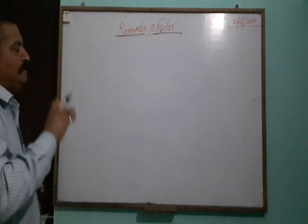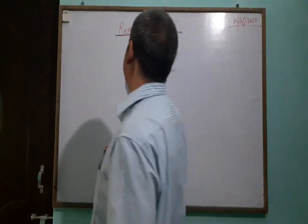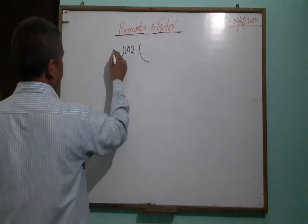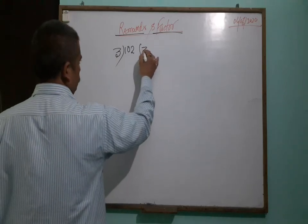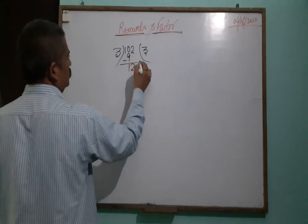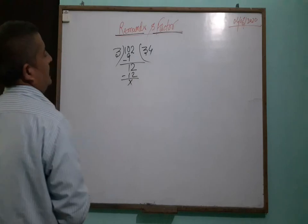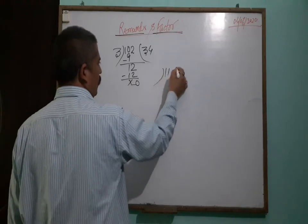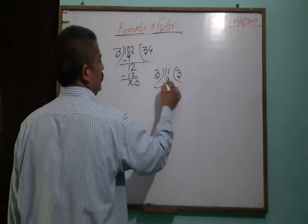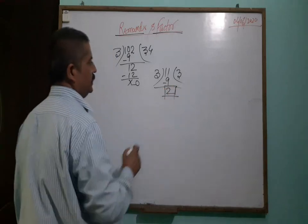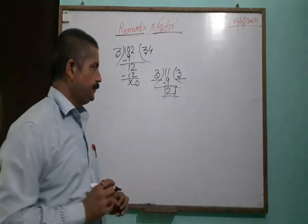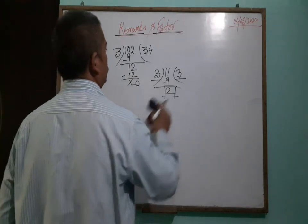First of all, to make this clear, let us look at a simple division question. For example, if 4 is divided by 3, the remainder is 0. In another example, 2 is the remainder, 3 is the quotient, 3 is the divisor, and the other term is the dividend. That is simple numeric division.